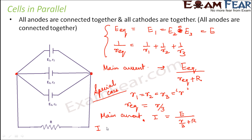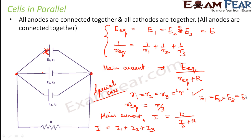In the parallel case, the main current I equals I1 plus I2 plus I3 — through each cell the currents I1, I2, and I3 flow respectively. Since R1 equals R2 equals R3 equals R and E1 equals E2 equals E3 equals E (because they are all connected in parallel), we can say I1 equals I2 equals I3. Therefore, I equals 3 times I1, or I1 equals I by 3. So the current from each cell is I by 3, and all of them join together to form I, the main current flowing through the circuit.